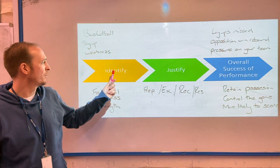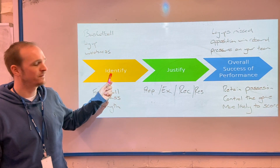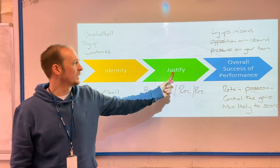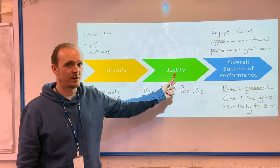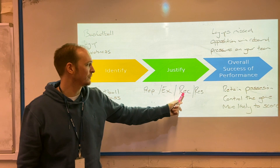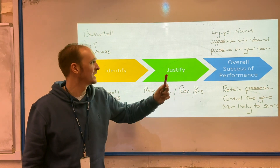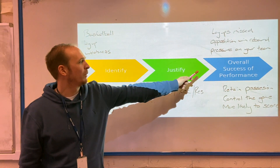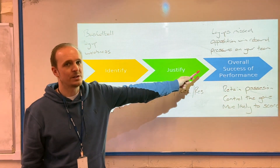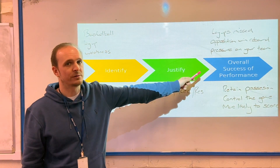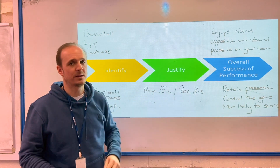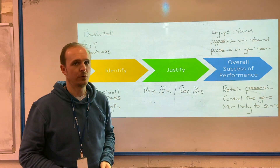So that's one strength and one weakness. Remember: we have to identify what the particular skill is, we have to justify why it's an issue by looking at the preparation, execution, recovery, and result phases, and we have to make sure we've said how each skill — whether it's a strength or weakness — is affecting the overall performance.